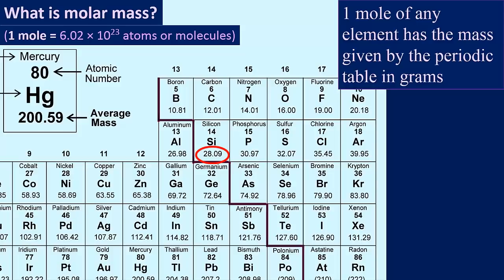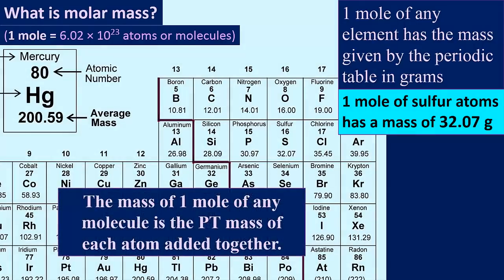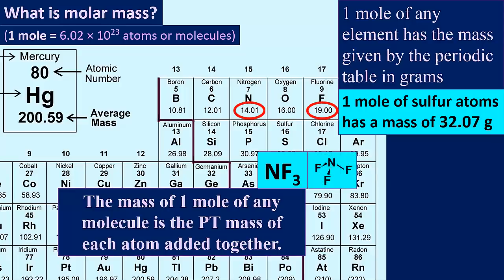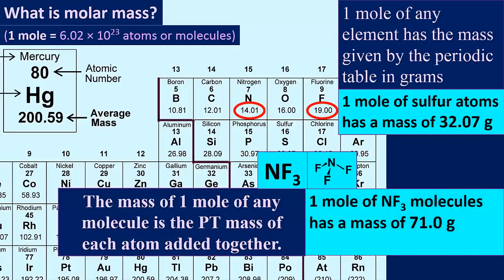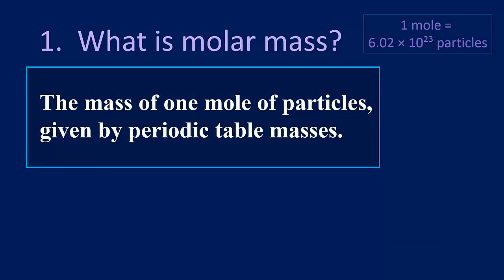Let's give that statement meaning with some examples. So, a mole of silicon atoms has a mass of 28.09 grams. A mole of phosphorus atoms has a mass of 30.97 grams. And a mole of sulfur atoms has a mass of 32.07 grams. What about molecules? The mass of one mole of any molecule is the periodic table mass of each atom added together. For example, one mole of NF3, or nitrogen trifluoride, has a mass of 71.0 grams. The mass of one nitrogen and three fluorines added together. So, this is how molar mass is defined.